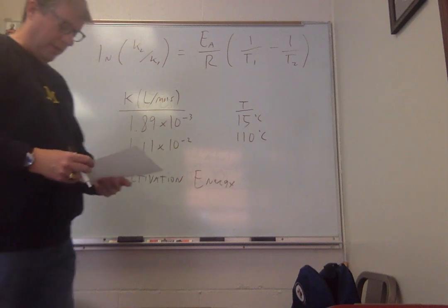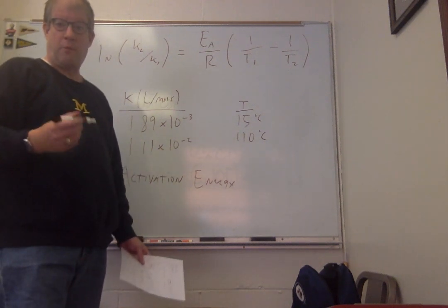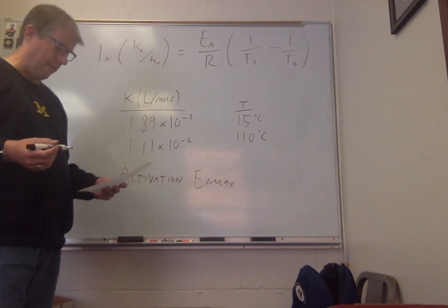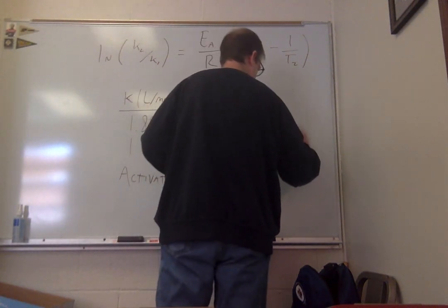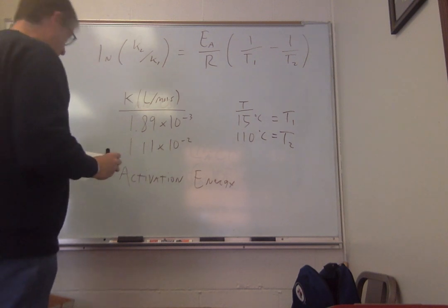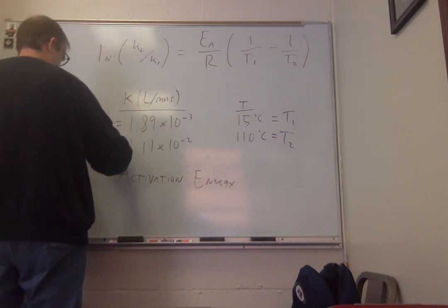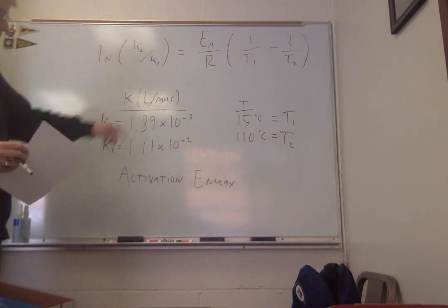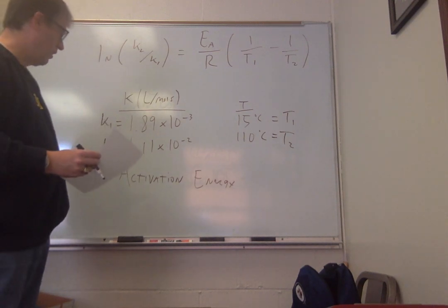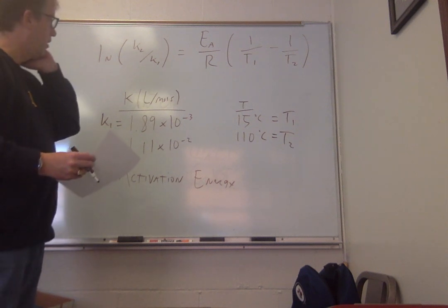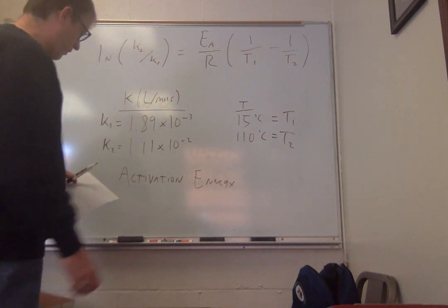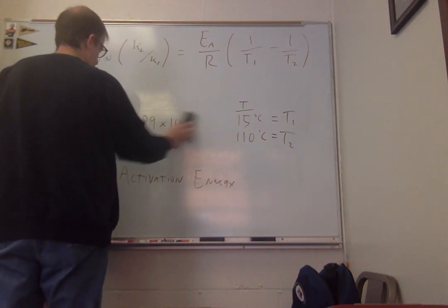Here's the kinetic data: T1 is 15°C and T2 is 110°C, so K1 is 1.89 times 10 to the minus 3 and K2 is 1.11 times 10 to the minus 2. As long as you keep that straight, this should be relatively easy. We're going to plug our values into this equation, and I'll go through it in a little more mathematical detail since it has natural logs in it.